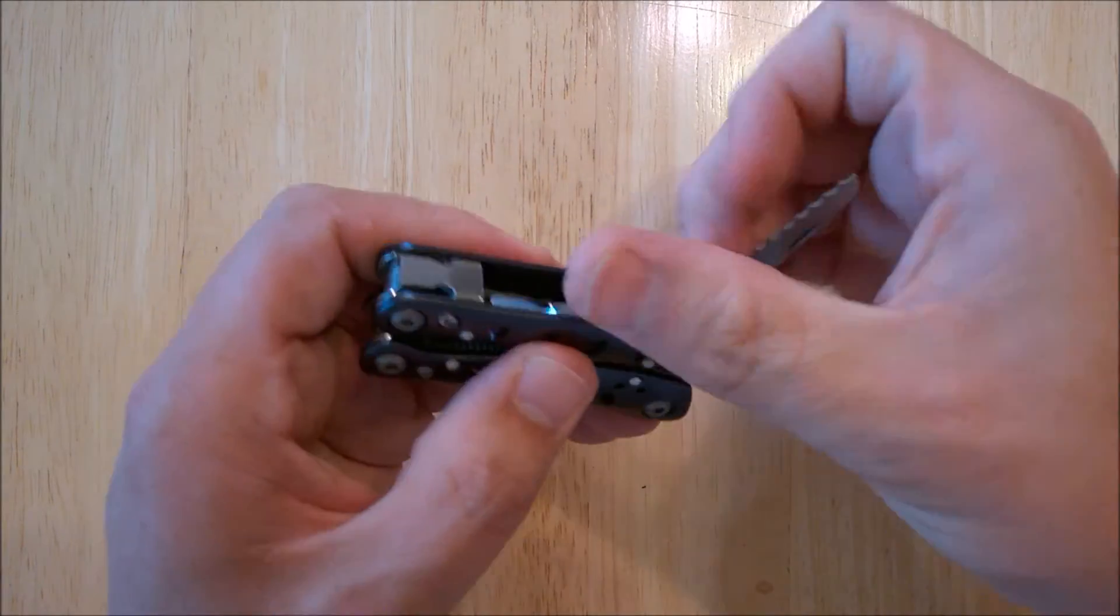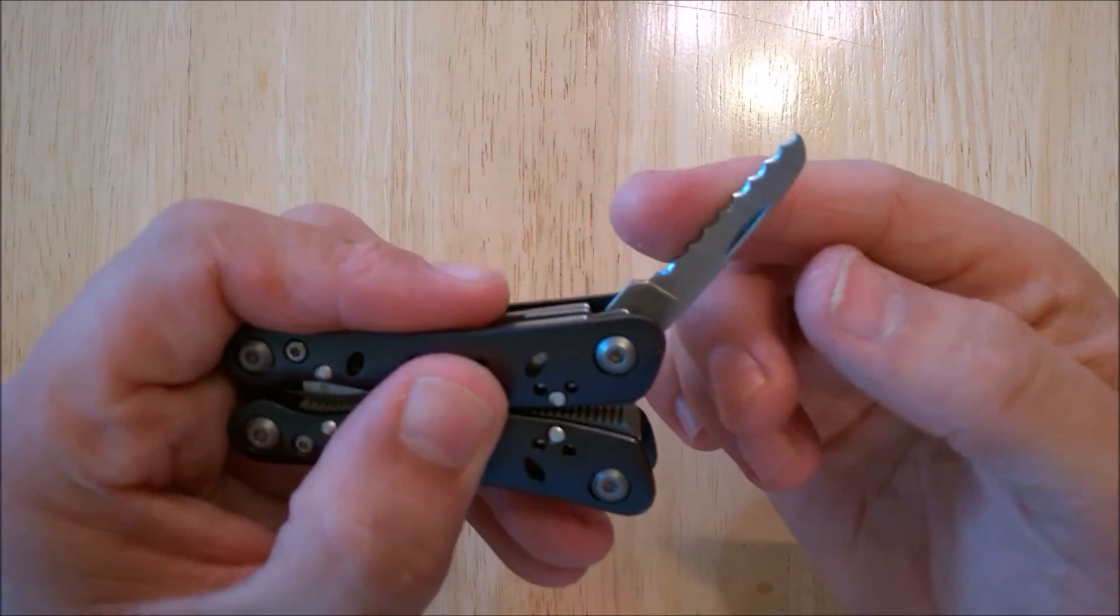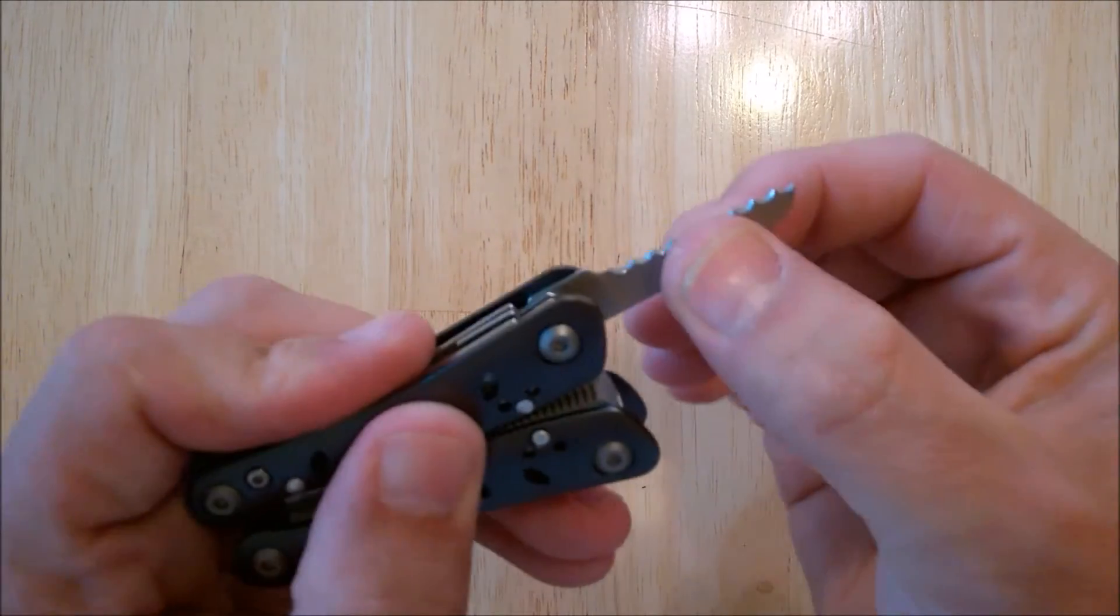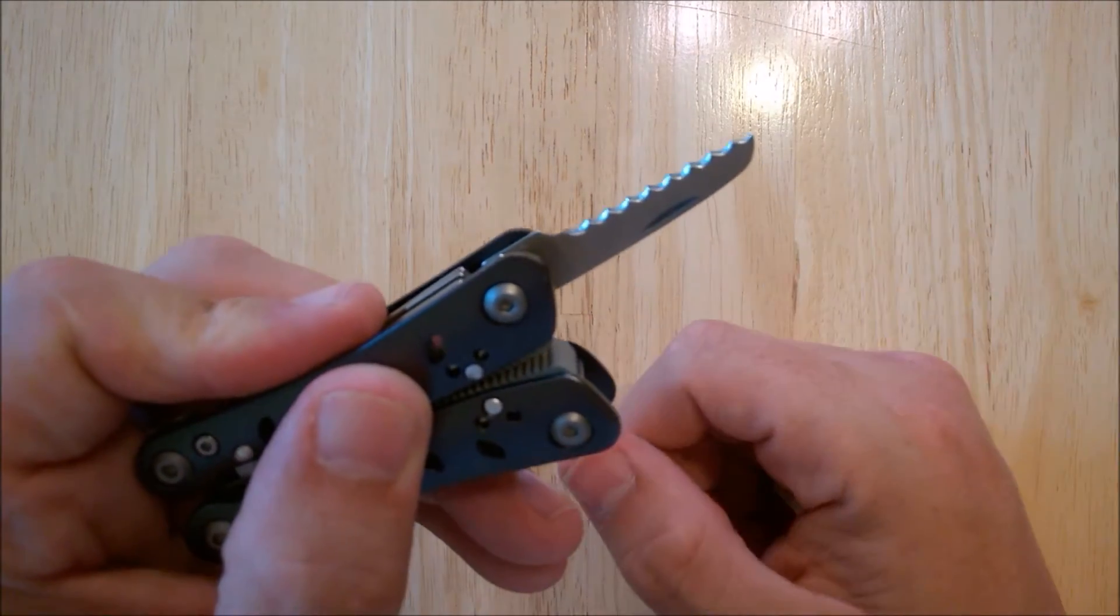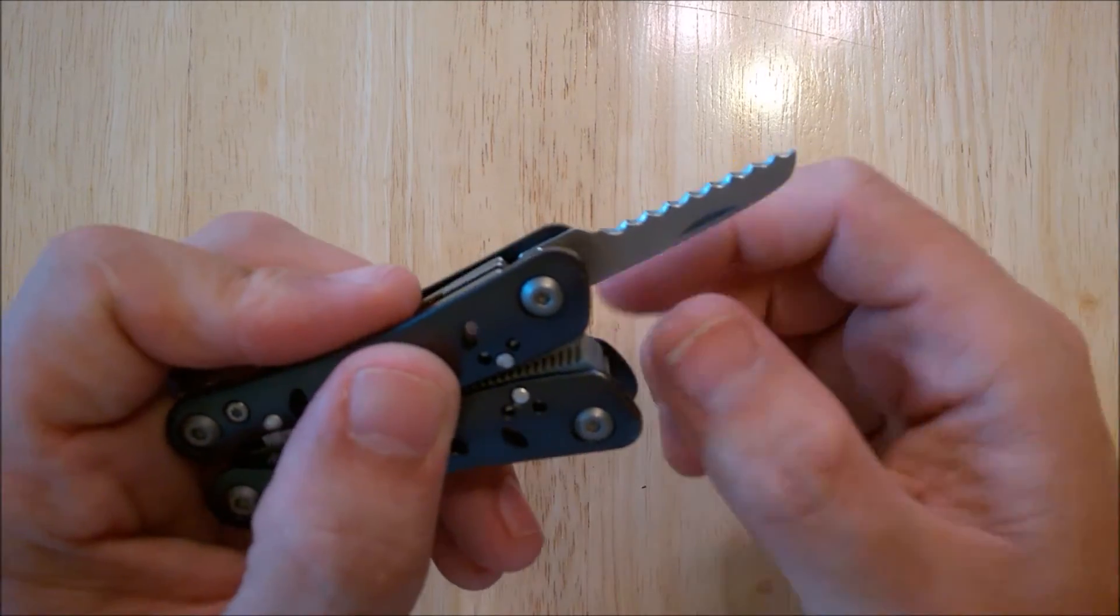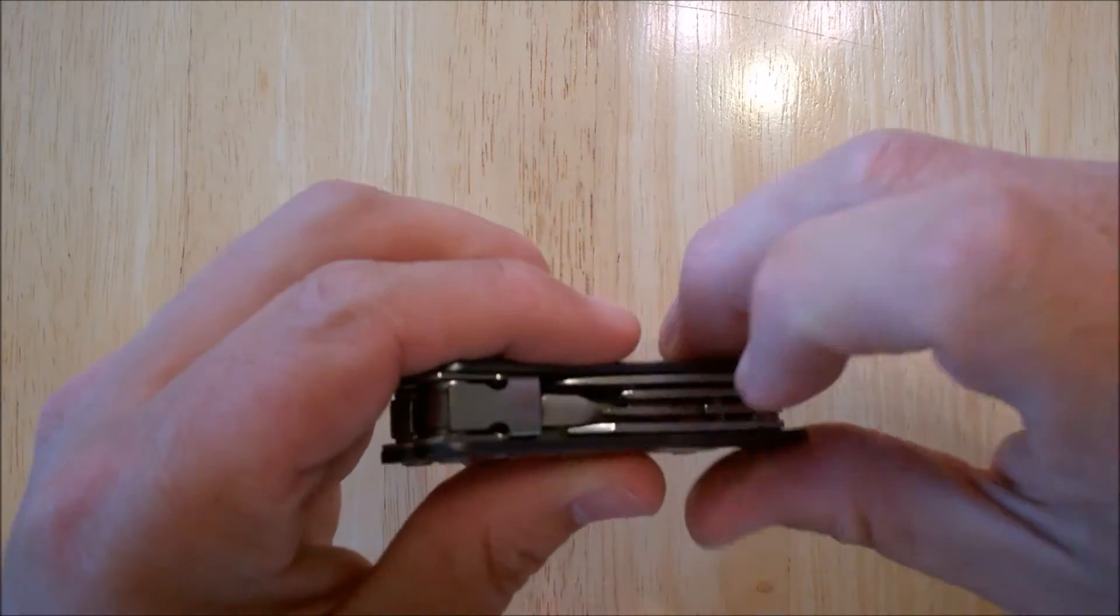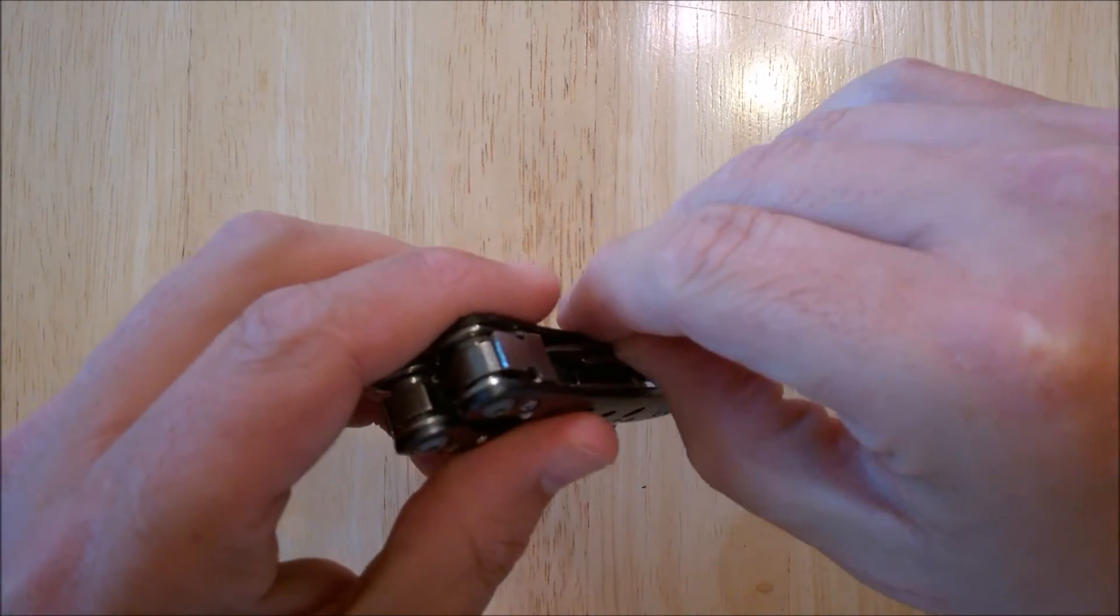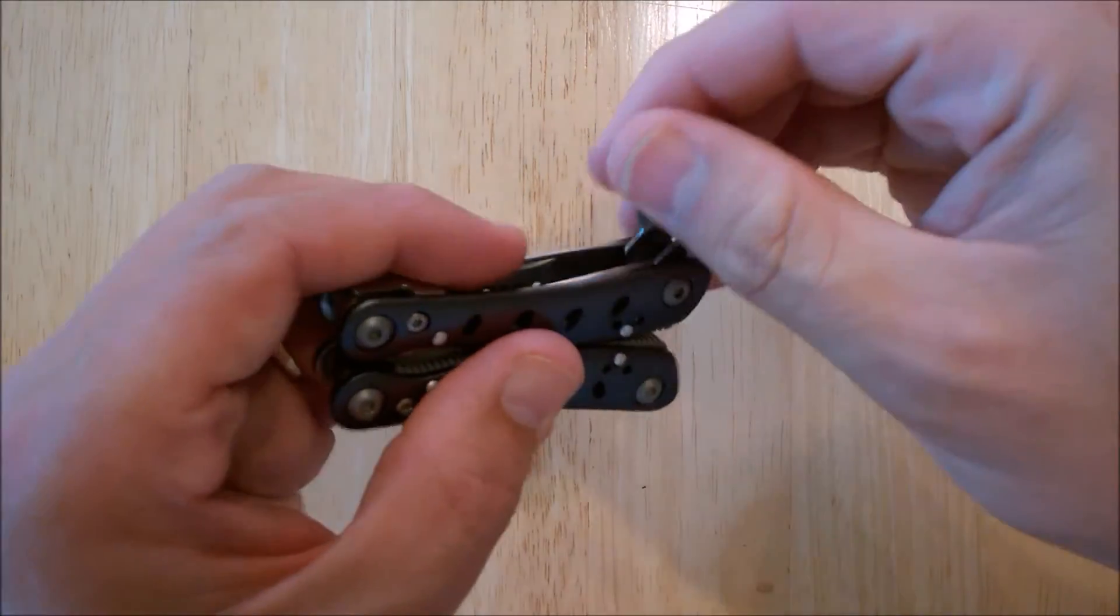On the other side, we have a serrated knife and that's pretty sharp. Again, it's the same kind of dimensions as the other one, an inch and a quarter long. And beside it, oops, I forgot, that one also has the nail notch.